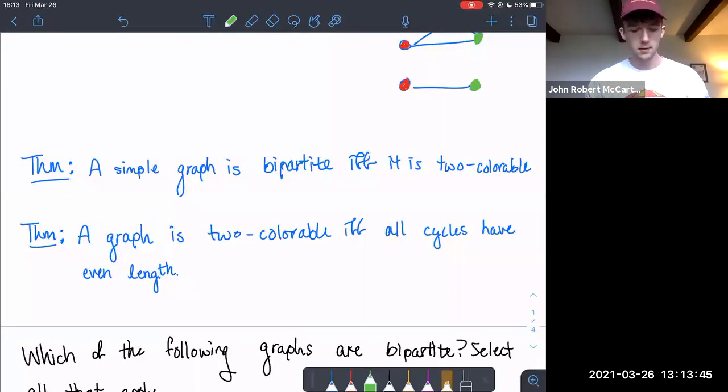The other theorem is that a graph is two-colorable if and only if all cycles have even length. So this allows us to say that a simple graph is bipartite if and only if all cycles in that simple graph have even length, or there are no cycles of odd length.